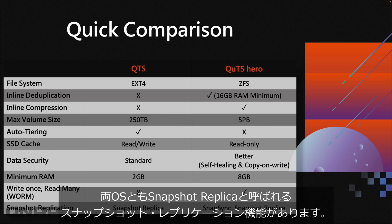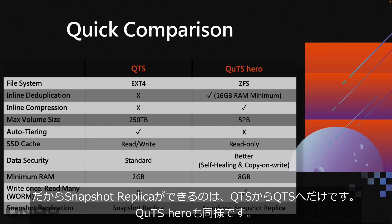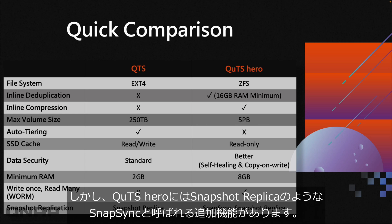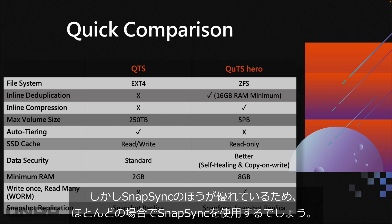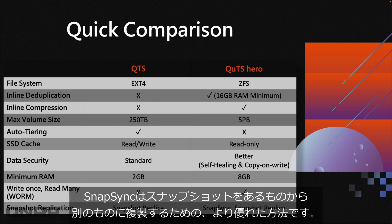Both operating systems have snapshot replication, called Snapshot Replica, but they are not compatible with each other — you can only replicate QTS to QTS, and QUTS Hero to QUTS Hero, because the file systems differ. QUTS Hero also includes an extra function called SnapSync, which is essentially snapshot replica but much better — it offers real-time options and far more functionality, which I'll cover in more detail.